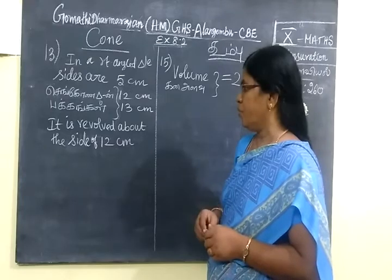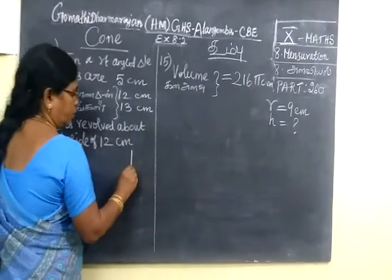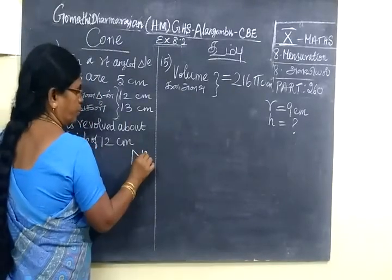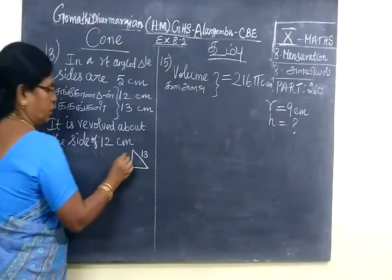This is revolved about the side of 12 cm. If we have a right angle triangle, it's gonna count upon the height part. This is greatest number, it is height.